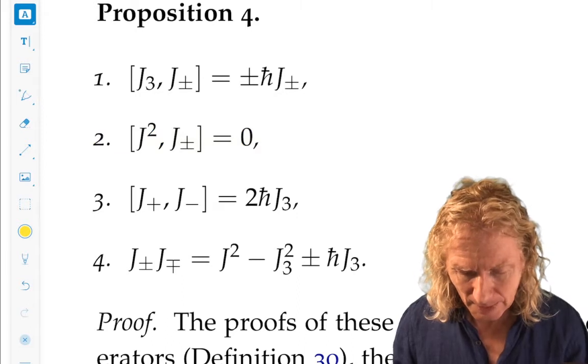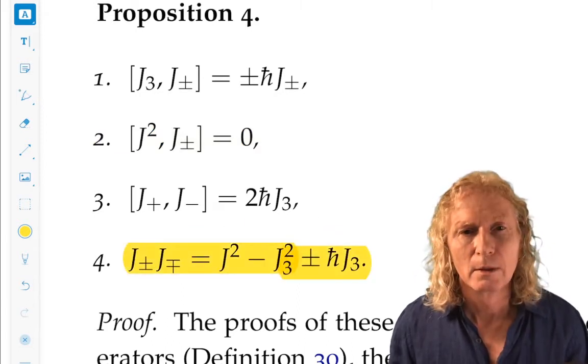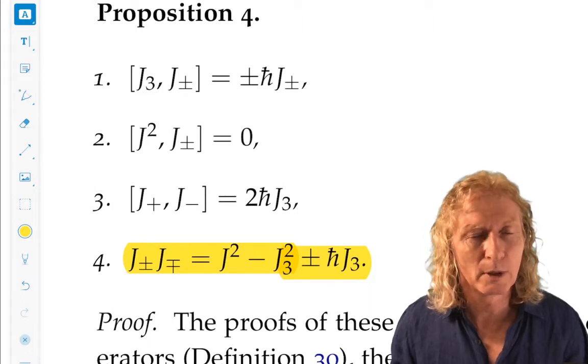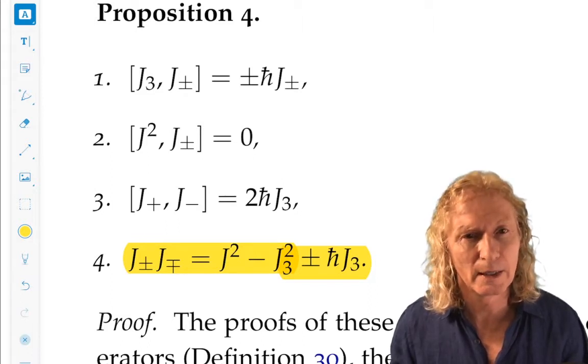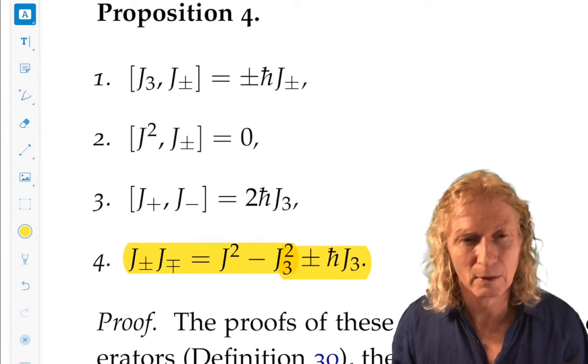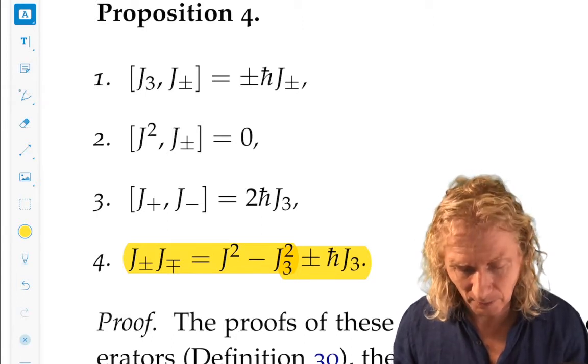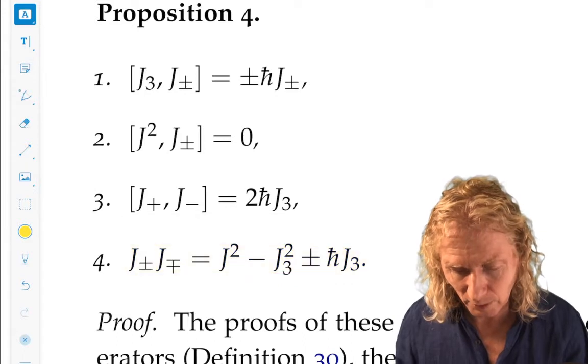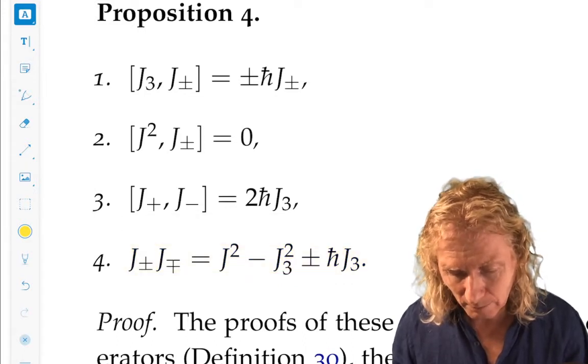This last relation is very important for understanding how j-plus and j-minus act on eigenstates. Because we don't necessarily know how they act on eigenstates because they're eigenstates of j-squared and j3.